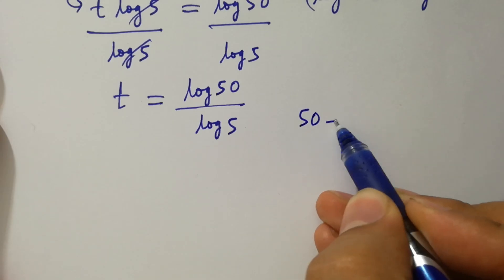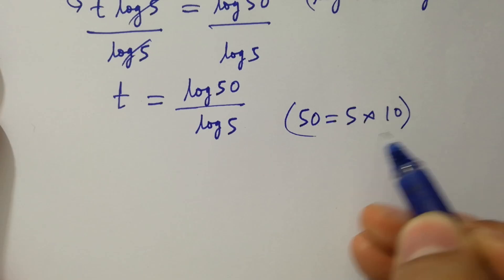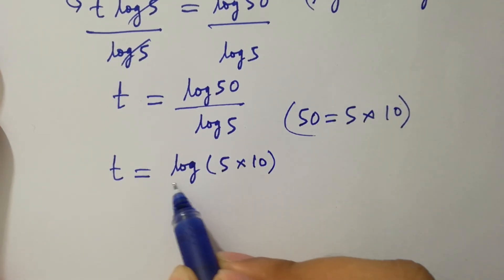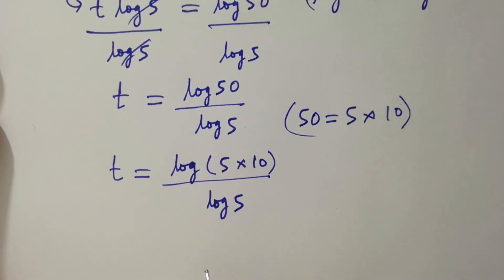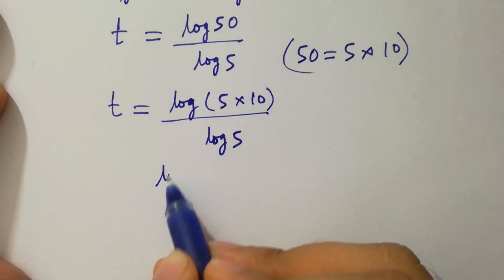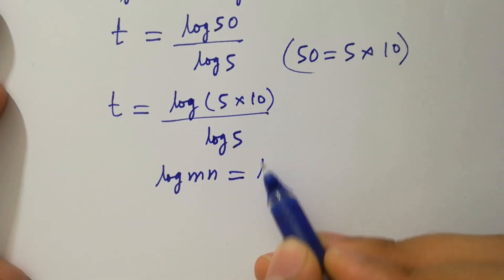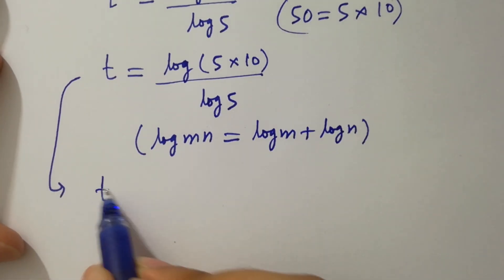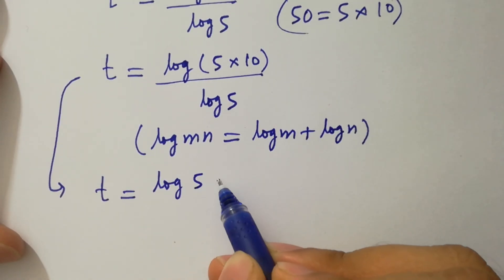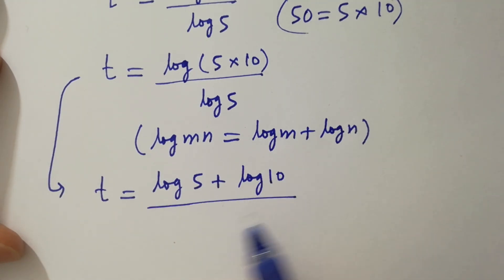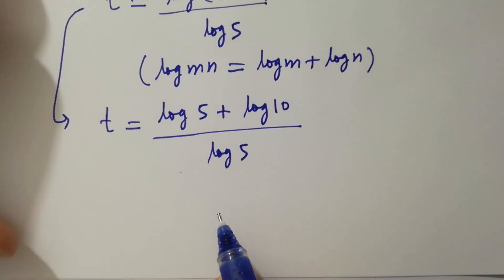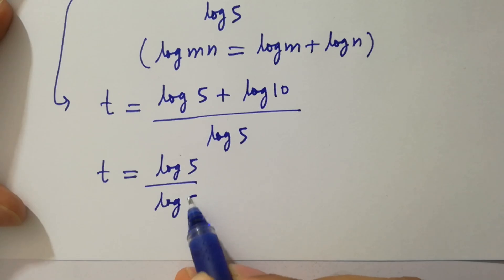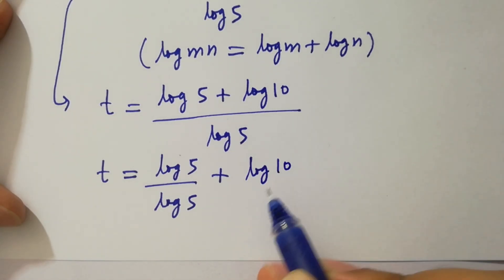Since 50 equals 5 times 10, t equals log of (5 times 10) over log 5. Separating the fractions, we have log 5 over log 5 plus log 10 over log 5.